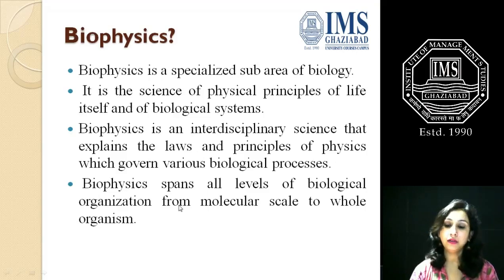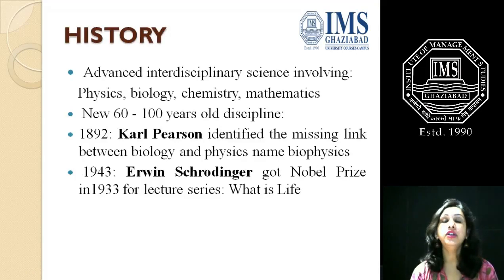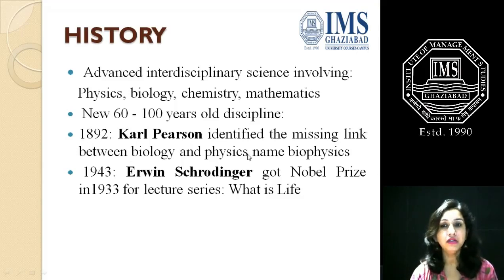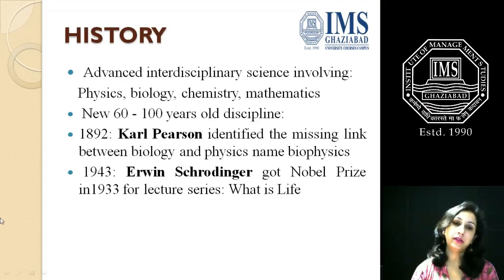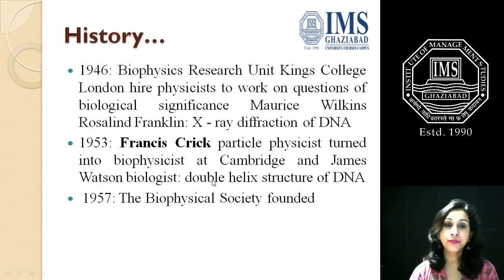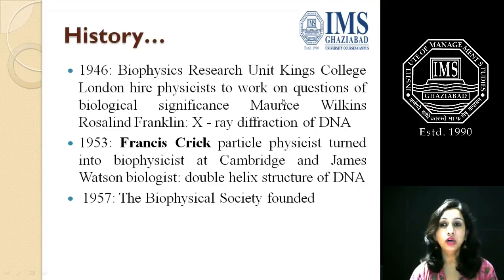For the history of biophysics: it is an advanced interdisciplinary science comprising physics, biology, chemistry, and mathematics. It started nearly 60 to 100 years back. In 1892, Carl Pearson identified the missing link between biology and physics and named it biophysics. Later, in 1943, Erwin Schrödinger — who won the Nobel Prize in 1933 — gave his lecture series 'What is Life?' In 1946, biophysics research at King's College London worked on questions of biological significance, including work by Maurice Wilkins and Rosalind Franklin.